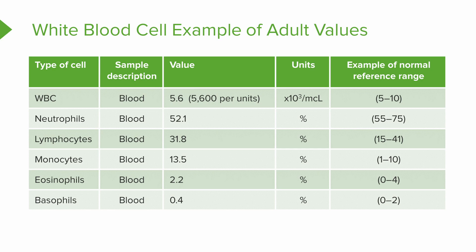Look at the top entry — it says WBC, which stands for white blood cell. The value shown is 5.6, and the normal reference range is 5 to 10. So this patient's value is a little on the low side but still within normal range. Beneath the total WBC, you see the five different types. These are reported as percentages: neutrophils are 52.1% and lymphocytes are 31.8%.